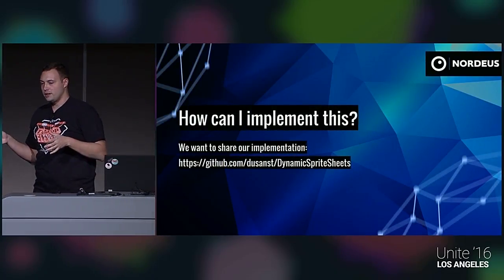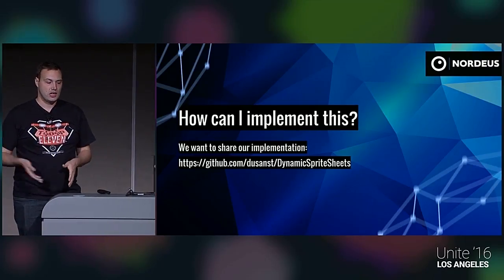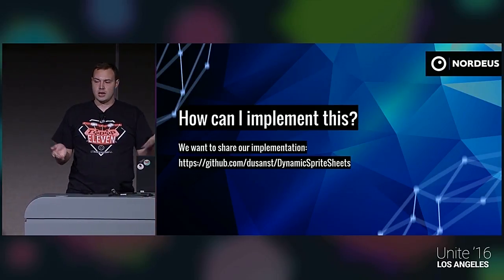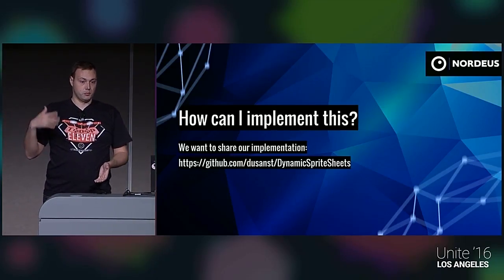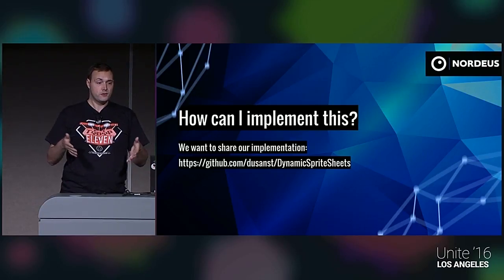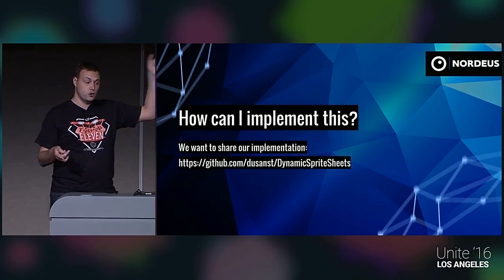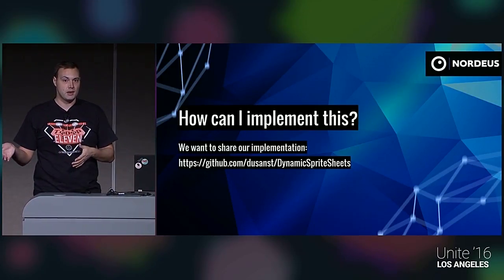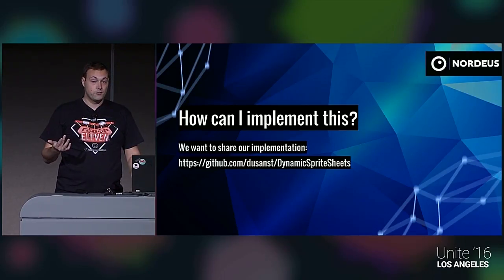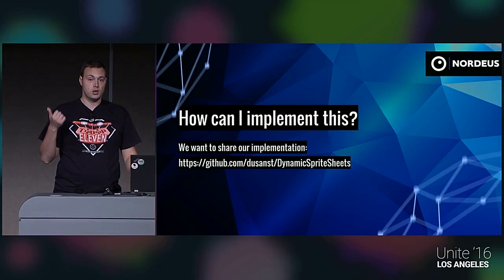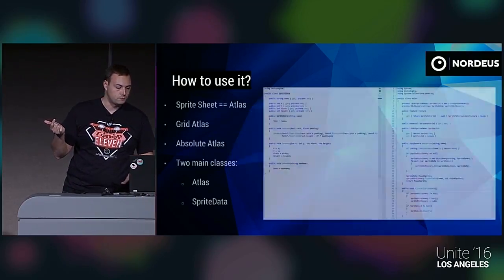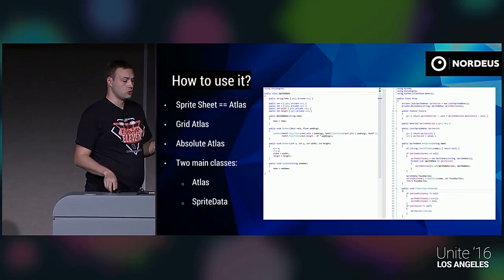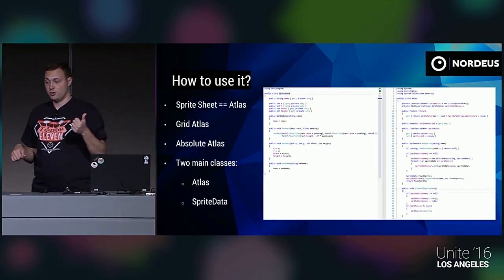The company I work for, Nordius, sent people here a few times giving speeches, and always the best feedback we got is by sharing our implementation. We've been using this system for two or three years now, and it's been in production for that time. So we separated it from all of our systems and placed it on GitHub. If you go to this link, you'll find the total implementation of dynamic sprite sheets — or sprite sheets made in runtime. Because it's separated from each GUI system, you can use it with either Unity GUI or any of your custom GUIs. In our implementation, sprite sheets called atlases — a commonly known synonym — and we have two of them: grid and absolute atlas.